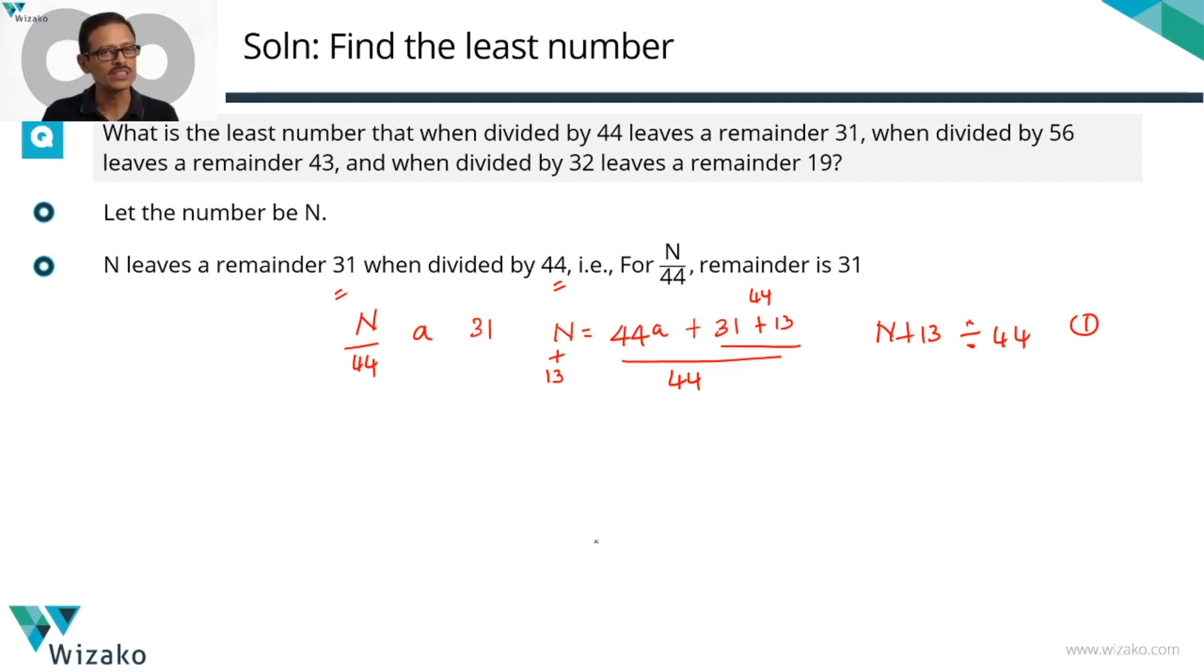Let's quickly run through the remaining two divisions and check out whether we can draw a similar inference. The second one says when N is divided by 56, let me say the quotient is a B and we get a remainder which is equal to 43. So you can write N to be equal to a 56B plus a 43. Let's add the same 13 to both sides. 43 plus 13 is a 56. The left hand side is going to be an N plus 13. 56B is divisible by 56. This part is divisible by 56. So this net number N plus 13 is a number that is divisible by 56. So N plus 13 was divisible by 44. N plus 13 we realized is now divisible by 56. So inference number 2.